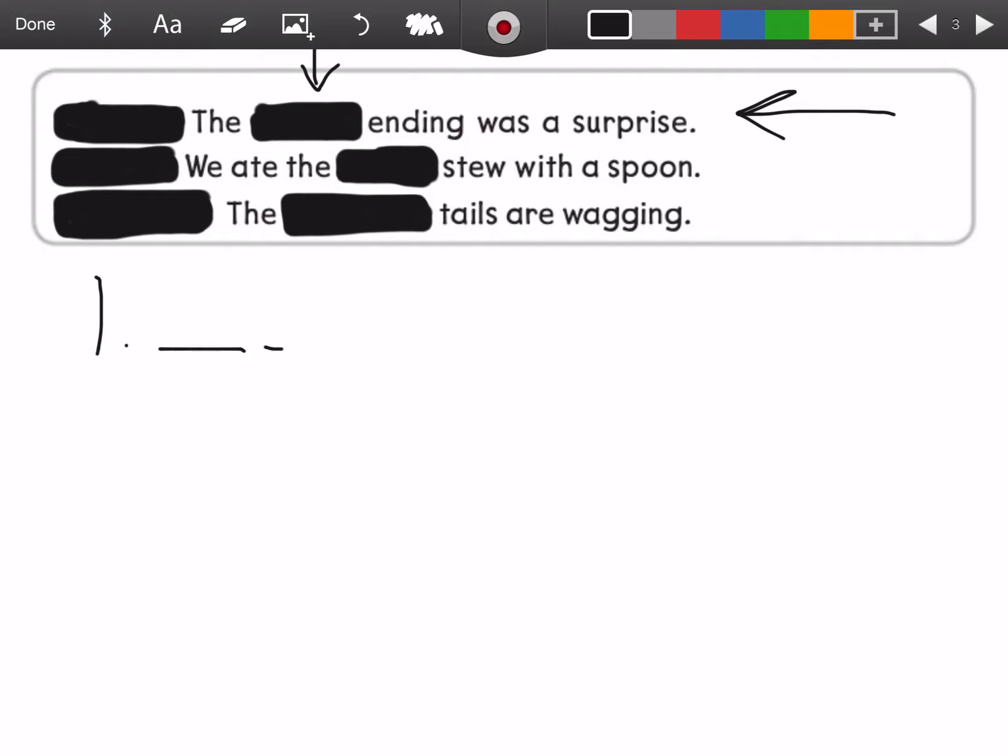Word number one goes with this sentence. The story's ending was a surprise. Spell stories. I want you to spell stories without forgetting that apostrophe. Here we go. St. Or. E. S. Stories. The story's ending was a surprise. Don't forget to add an apostrophe. Somewhere in that word.